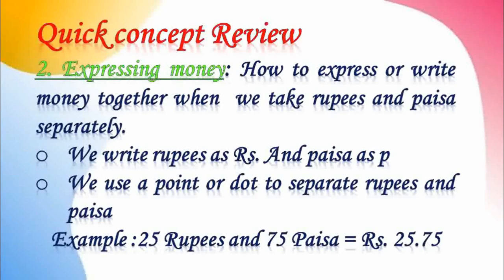Point 2 — Expressing money. How do we express or write money together when we take rupees and paise separately? We write rupees as RS and paise as P. We use a point or dot to separate rupees and paise. For example, Rupees 25 and 75 Paise is written as RS 25.75.